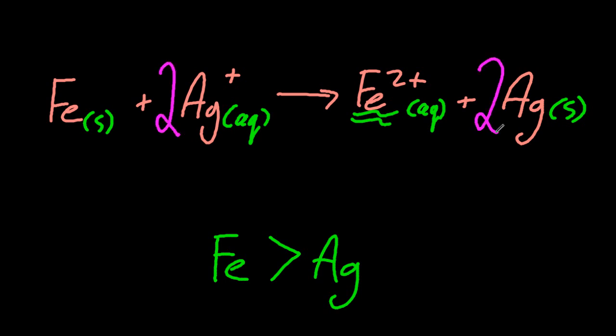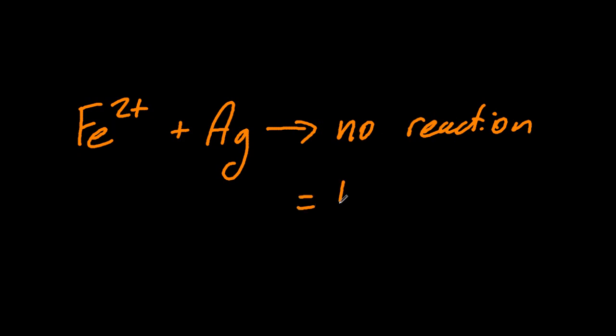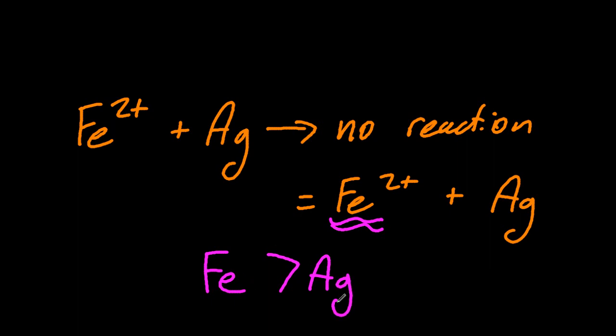Okay, so what about this one here? Iron 2 plus and silver, well, that's the last reaction backwards. You know what? That doesn't undergo a reaction. Nothing happens. It stays the same. So the most reactive ends up as an ion. So iron is more reactive than silver, again, because nothing happened.